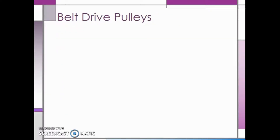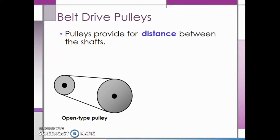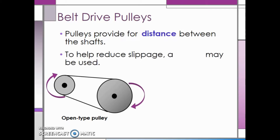Belt drive pulleys are useful because they provide distance between two shafts. In an open type pulley, the two shafts that the belt connects rotate in the same direction. However, to reduce slippage or to change the direction of rotation, a cross type pulley may be used.